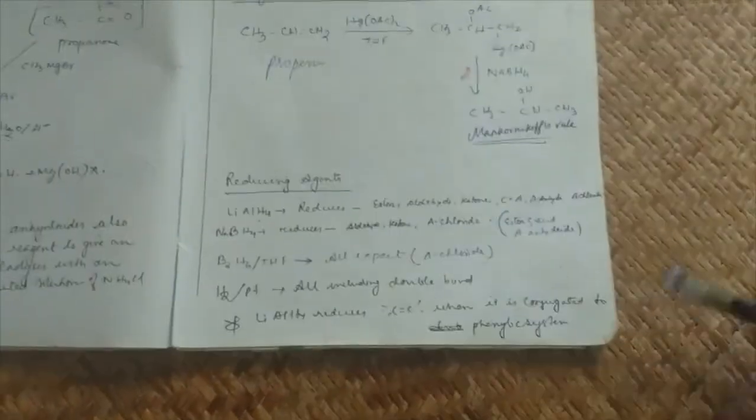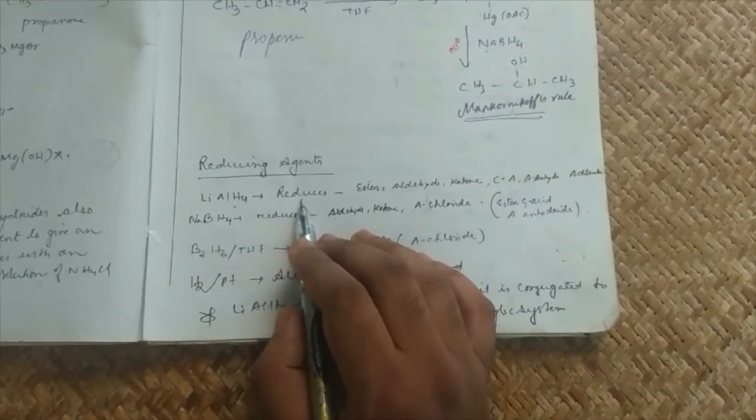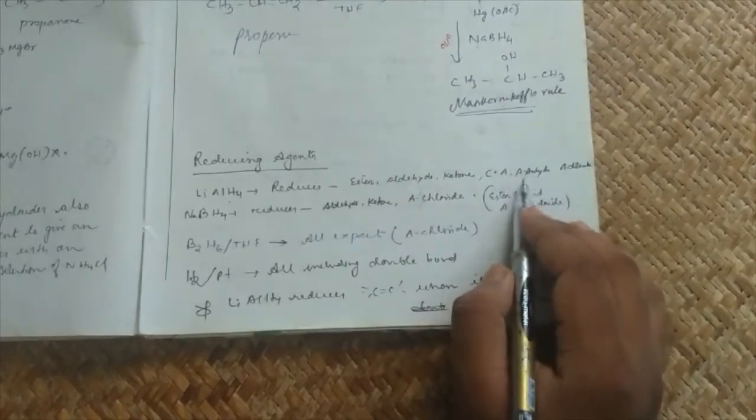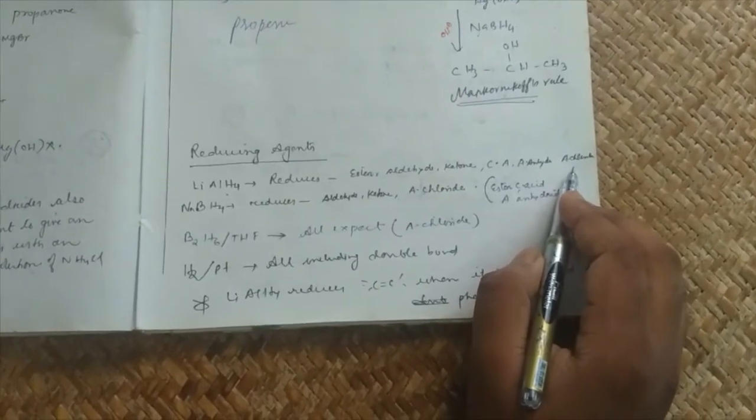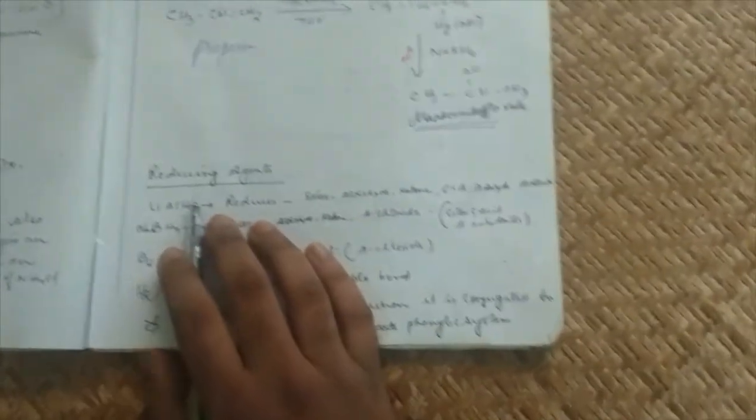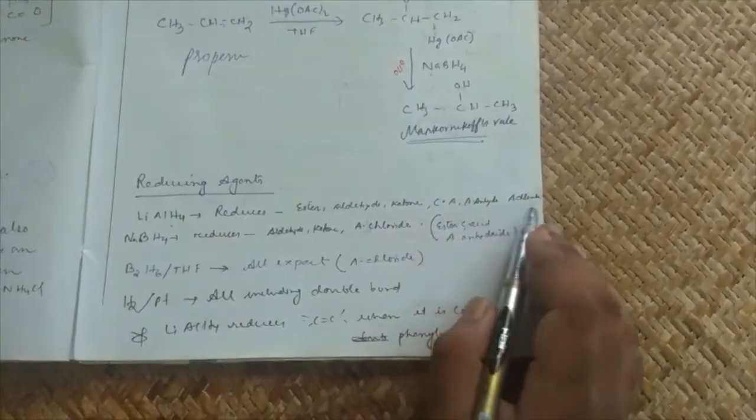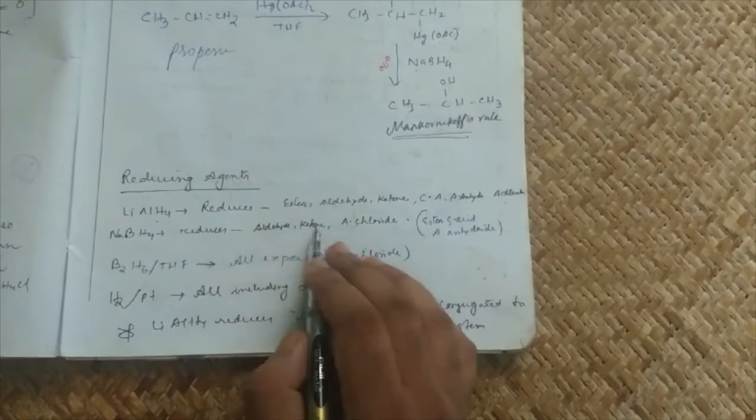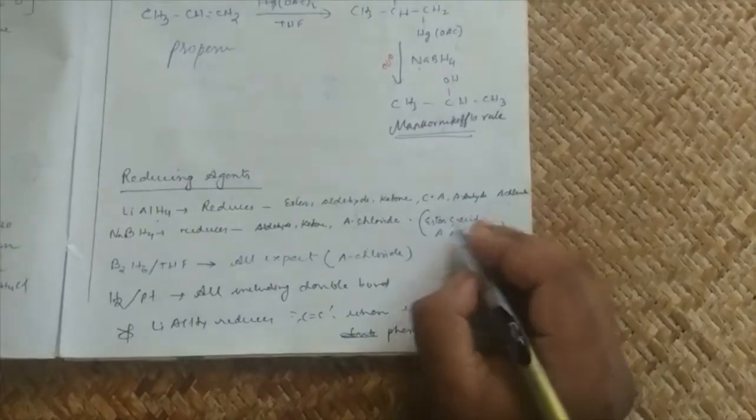It's very very important, reducing agent lithium aluminum hydride. What can we reduce? Many functional groups: ester, aldehyde, ketone, carboxylic acid, acid chloride. That's why lithium aluminum hydride is a strong reducing agent which can reduce almost all the functional groups.